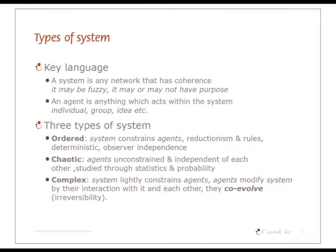The second type of system we have is the chaotic system, and there's all sorts of different ways in which people use chaos. A lot of people confuse chaos theory and complexity theory, but I have to define my terms. I'm talking about chaos in terms of randomness. So a chaotic system is one in which the agents are completely unconstrained. The irony is in a chaotic system, the agents are deterministic, but the system is non-deterministic.